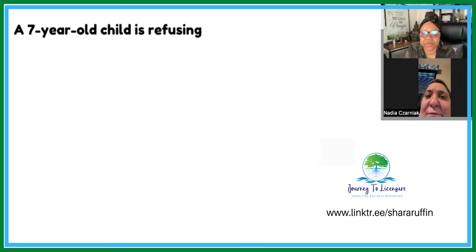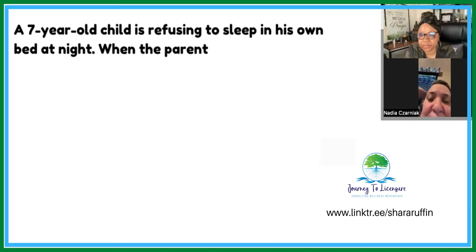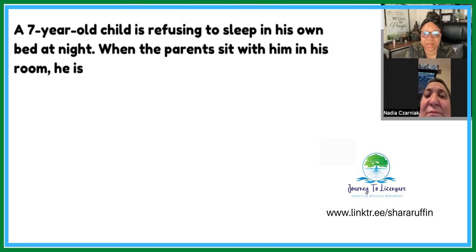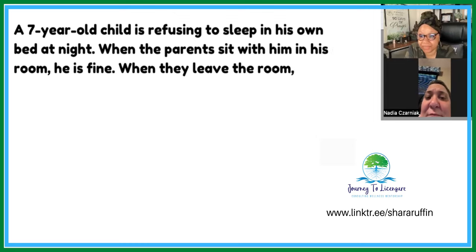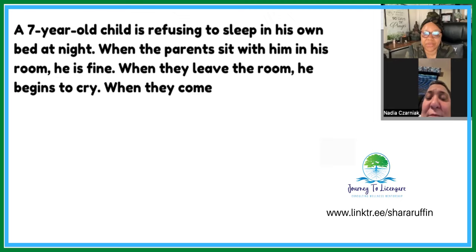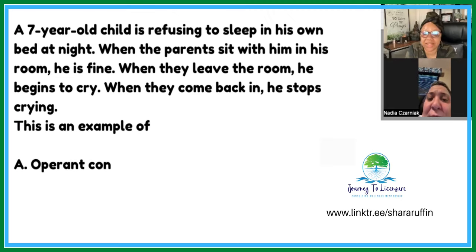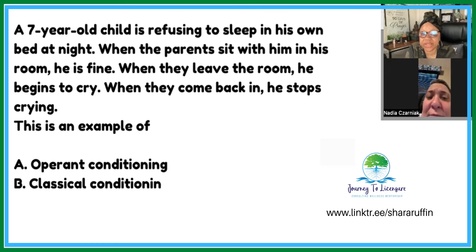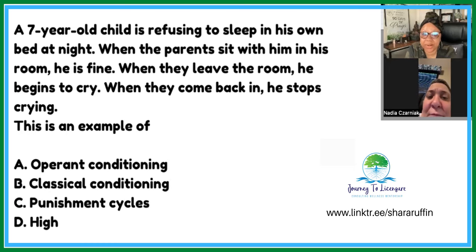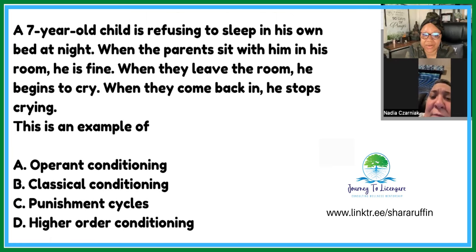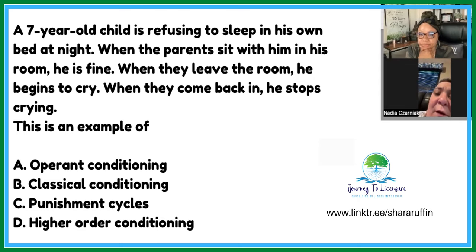A seven-year-old child is refusing to sleep in his own bed at night. When the parents sit with him in his room he's fine. When they leave the room he begins to cry. When they come back in, he stops crying. This is an example of: A) operant conditioning, B) classical conditioning, C) punishment cycles, D) higher order conditioning.